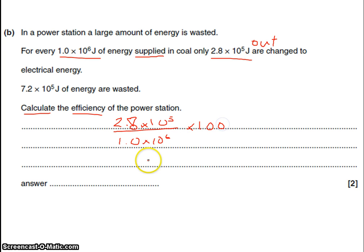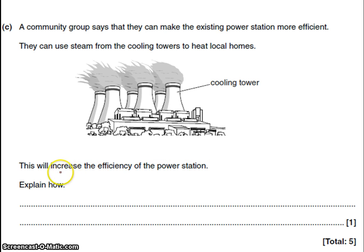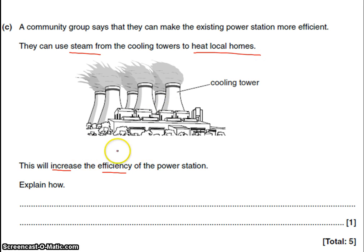You should have got a percentage of 28%. The next part asks how you can increase the efficiency. The reason something isn't efficient is because energy is wasted. The question states that the power station can use steam from the cooling towers to heat local homes, which increases the efficiency. Very simply, you're using what would have been wasted energy to heat the homes — otherwise it would have gone to waste — so the efficiency increases because you're putting more of the energy to good use.